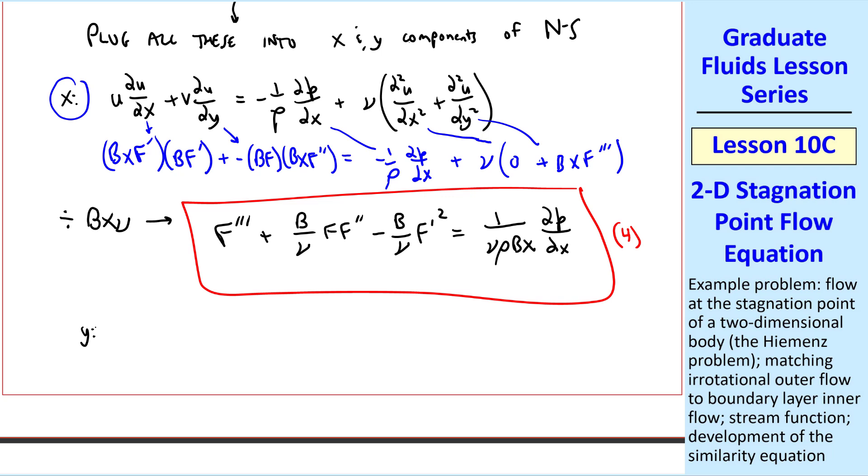We do the similar thing with the y-momentum equation. And I'll leave the algebra to the students. Our final result is b·f·f' = -1/(ρb)·∂p/∂y - ν·f'', which I'll call equation five. To achieve similarity, we have to somehow get rid of these pressure terms. So let's do an old trick.